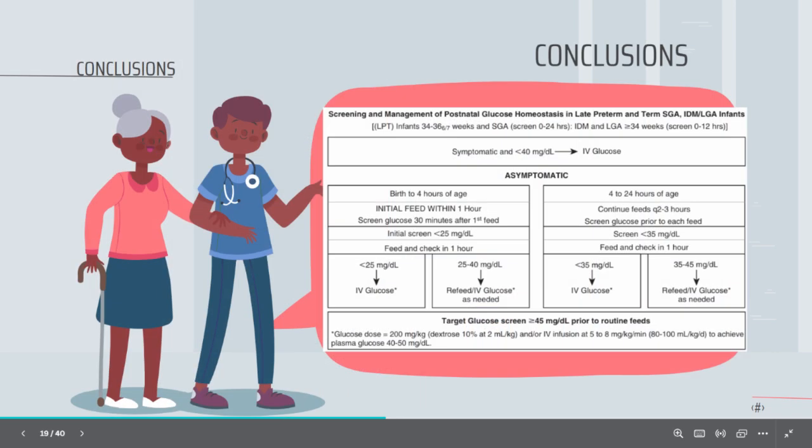So, in conclusion, any symptomatic baby with blood glucose level lower than 40 mg per deciliter should be given IV glucose. While asymptomatic babies at birth to 4 hours of age, initial feed within 1 hour. Screen glucose 30 minutes after first feed. If initial screen less than 25 mg per deciliter, feed and check again in 1 hour. If still less than 25 mg per deciliter, give IV glucose.